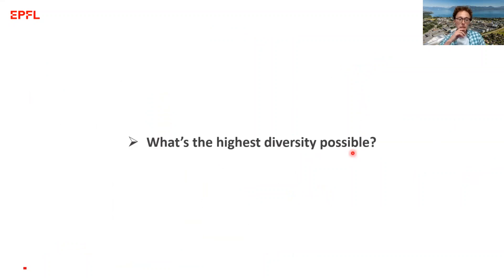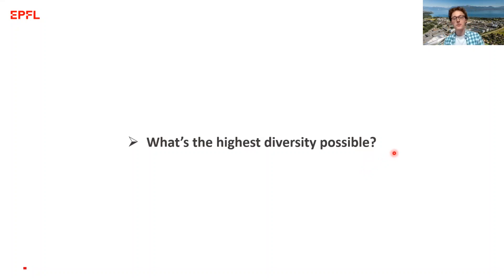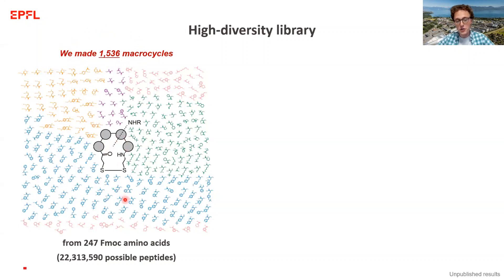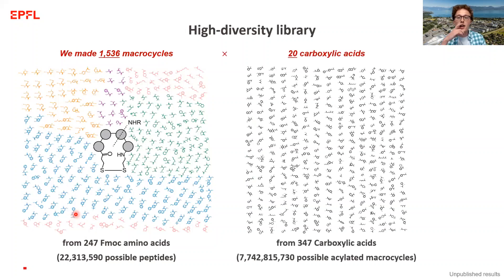That's the end of the previously published work. Now for some very recent, ongoing, unpublished work — particularly relevant because of the synthesizer upgrade Misha was talking about. Once we had this setup, we asked ourselves: now that we can use so many more building blocks, what's the highest diversity we can achieve? In the new library plan, we synthesized 1,500 disulfide macrocycle scaffolds from a total pool of 250 amino acids, and combined these 1,500 macrocycles with 20 different carboxylic acids to make a total of around 30,000 reaction products.